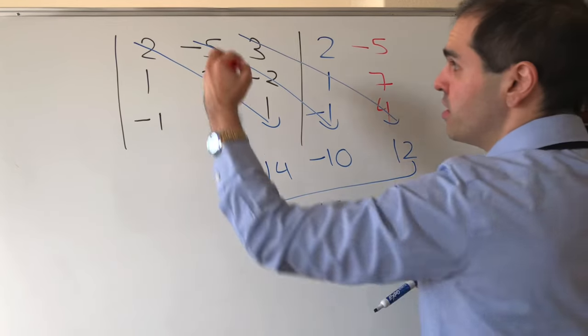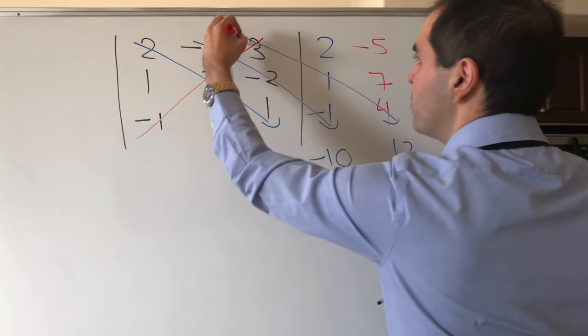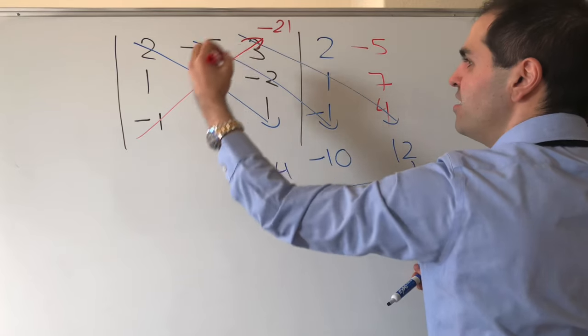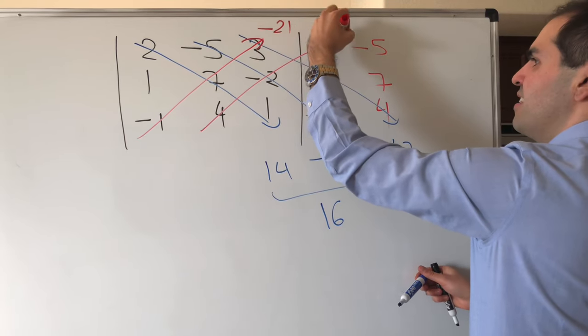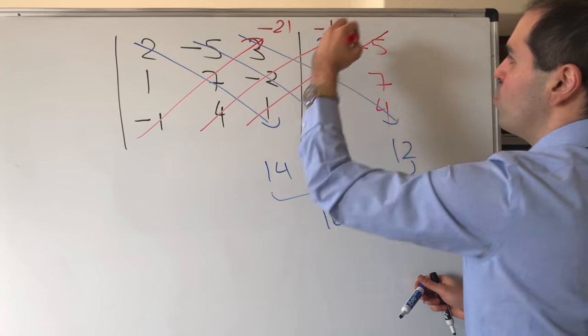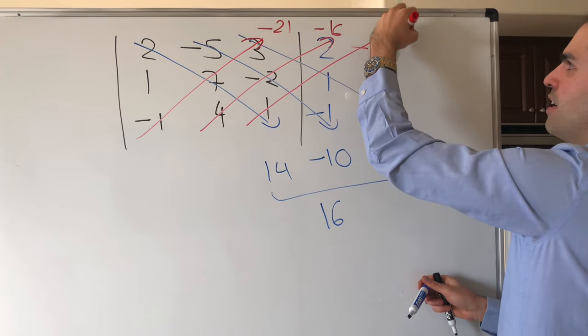And then you consider the anti-diagonal terms, so here you get minus 21, 4 times minus 2 times 2, that's minus 16, and then 1 times 1 times minus 5, that is minus 5, and you take the sum here, which becomes minus 42.